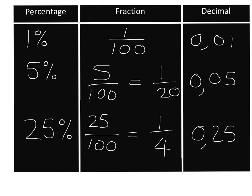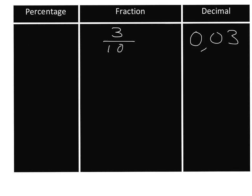Let's just go in the other direction now. If we want to turn a decimal into a percentage, it's just as easy, especially if we go through fractions. If we take 0,03 and want to find what it is as a percentage, our first step is to turn it into a fraction. We know 0,03 is 3 over 100, and the minute we have it as a fraction over 100 we can immediately say what it is as a percentage. Let's look at another example.